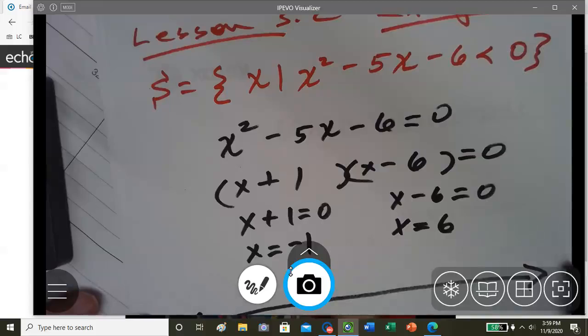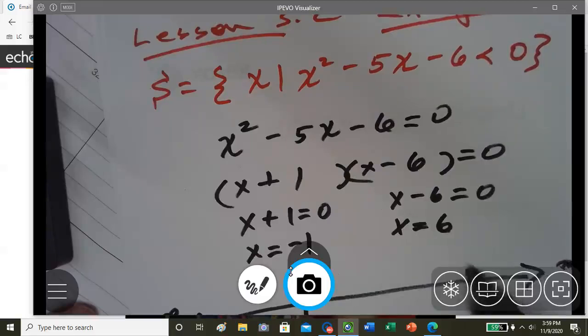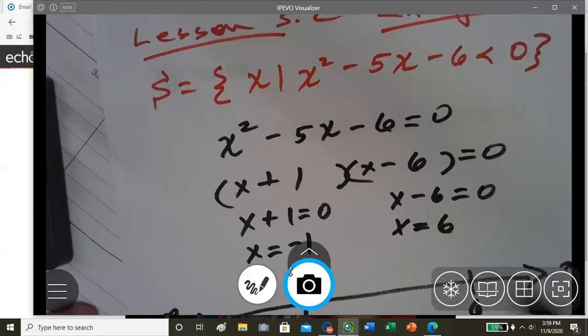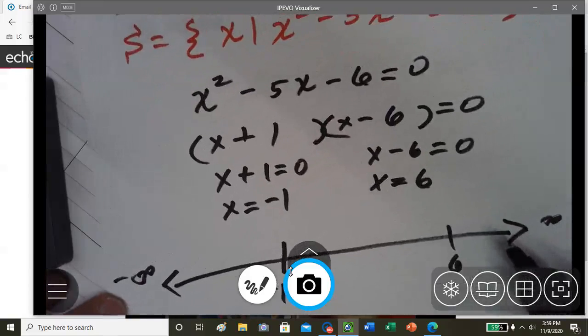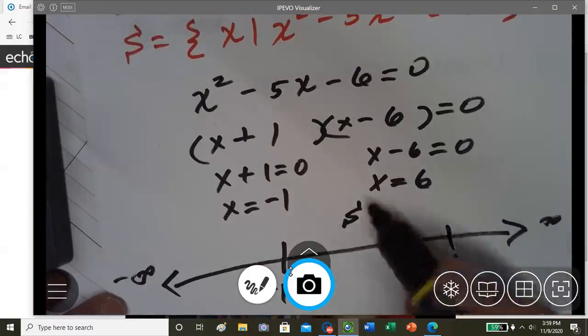Here's all real numbers and we have negative 1 is our greatest lower bound. 6 is our least upper bound. So here's our set S.